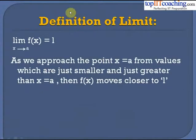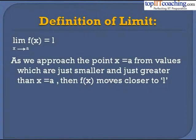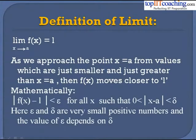Now let's define what the limit is. If x tends to a, the limit of f(x) is equal to L. As we approach x = a from values just smaller and just greater than a, f(x) moves closer and closer to the value L. Mathematically, we write: |f(x) − L| < ε for all x such that 0 < |x − a| < δ, where ε and δ are very small positive numbers, and the value of ε depends on the value of δ.